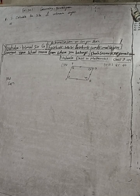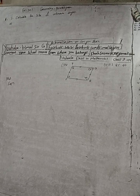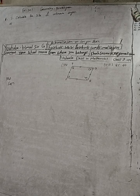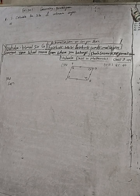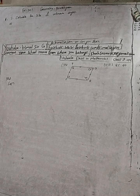Hi class 9 and 10 students, welcome back to Vimal Sarji YouTube channel. This is question number 3b, exercise 14.1, geometry parallelogram, class 9 Vedant Excel in Mathematics. The question is: calculate the size of the unknown angles, and the figure is given here.